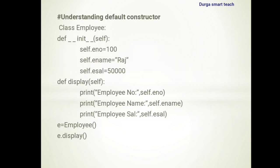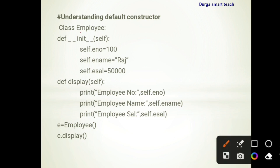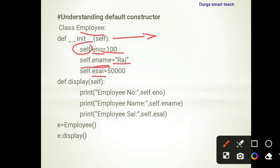Let's see an example for better understanding. This is the default constructor — class Employee. Inside the class it contains one constructor, which is a default constructor because it does not contain any additional parameters. Inside it we take three variables: e_number, e_name, and e_salary. Using self.e_number we store 100, self.e_name stores 'Raj', and self.e_salary stores 50000.